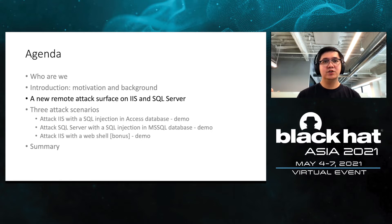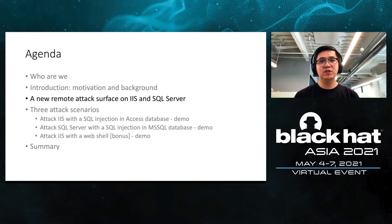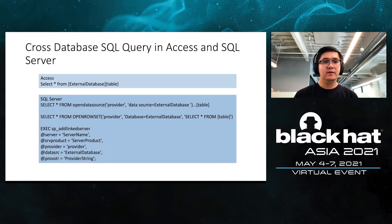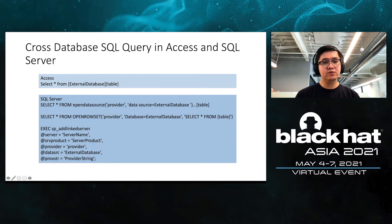Now we come to the main dish. Let's see the cross-database SQL query in Access and SQL Server first. In Access database, it's very straightforward — you just need to put the external database before the table name. In SQL Server, there are three ways to do that: OpenDataSource, OpenRowSet, and linked server. In each way, you can set the external database to the data source parameter, database parameter, or datasrc parameter.